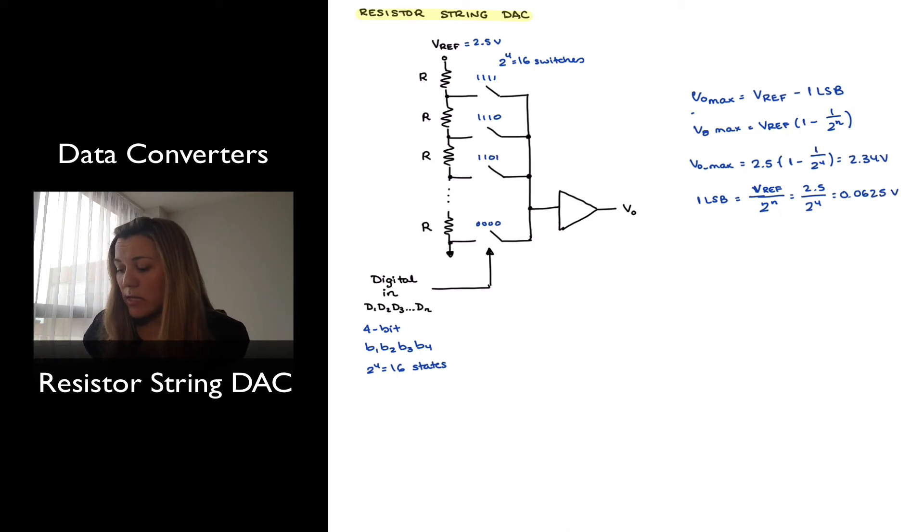And so essentially what I will have is my output increasing from 0 to 2.34 volts in steps of 0.0625 volts. So for a digital input 0001, my analog output will be 1 LSB, which is 0.0625 volts. 0010 gives 2 LSBs, which is equal to 0.125 volts, all the way to 1111, which will give me 15 LSBs, which will be 2.34 volts.